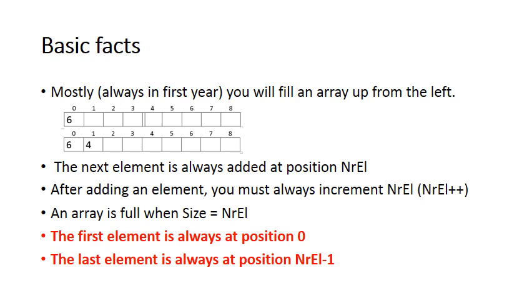So again if you look at the array there at the top which contains two elements, the first element is at position zero, the last element is at position one which is then obviously number of elements minus one.